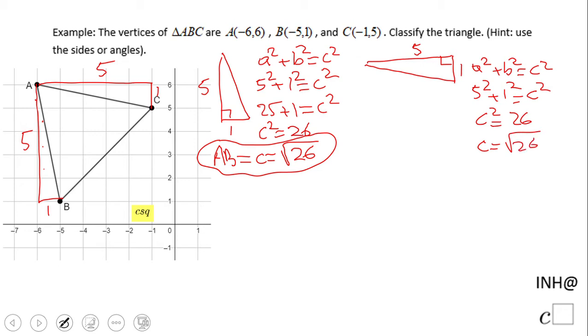Just looking at these two, you notice we have two congruent sides. We have AC congruent to AB, so we know as a fact that this triangle is at least isosceles.